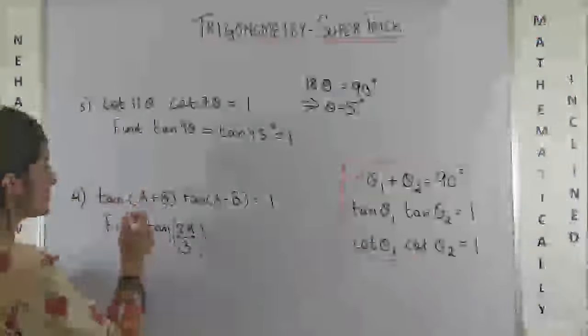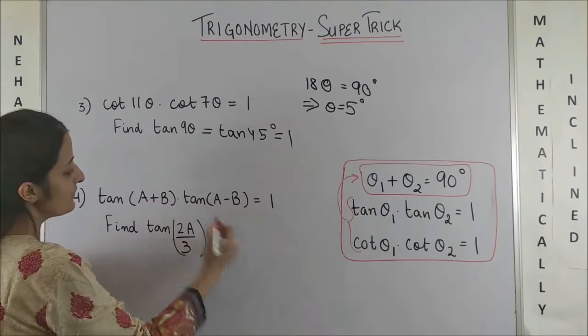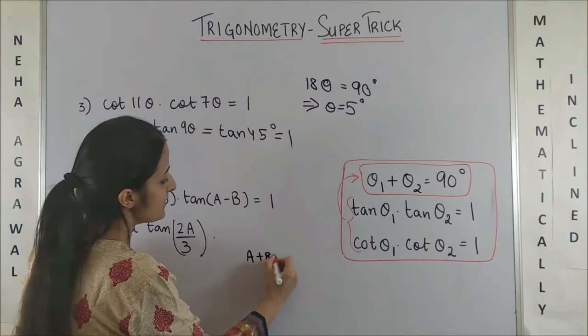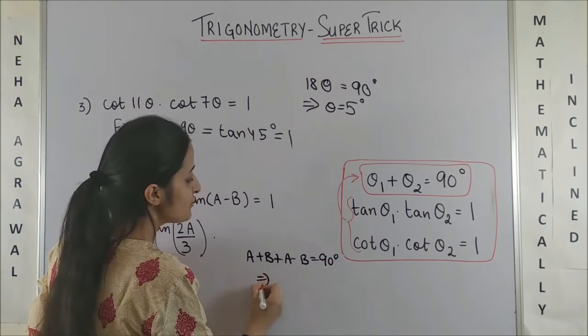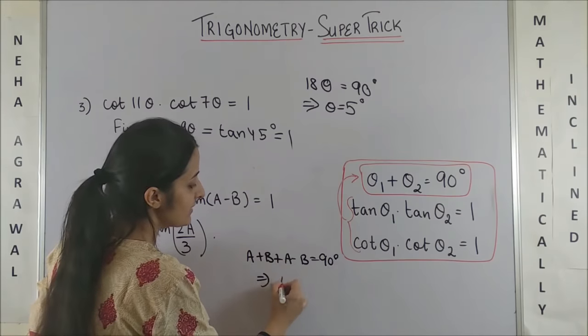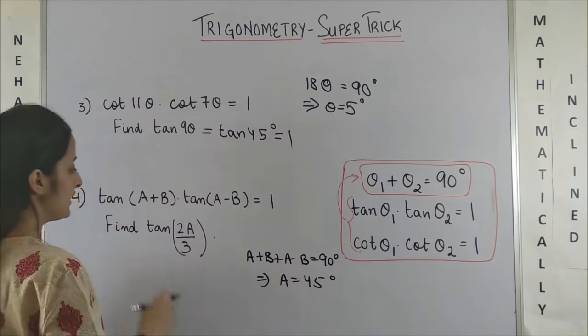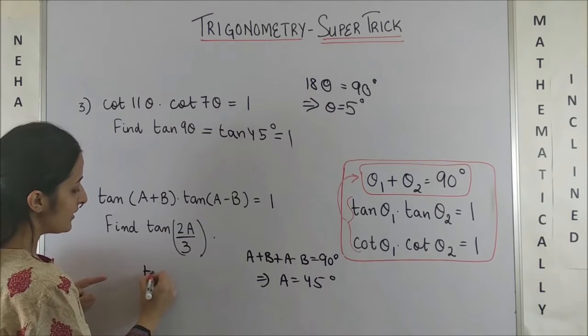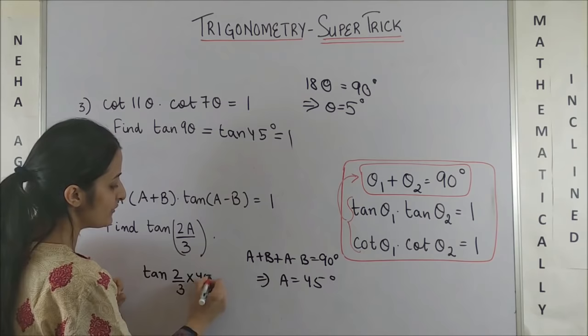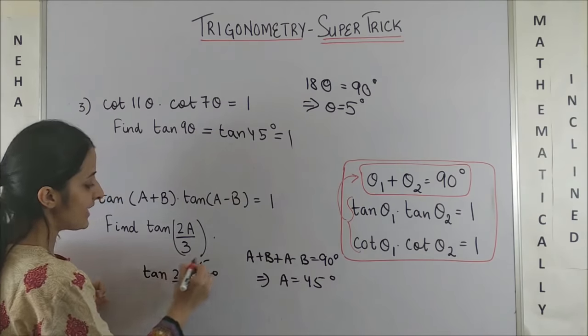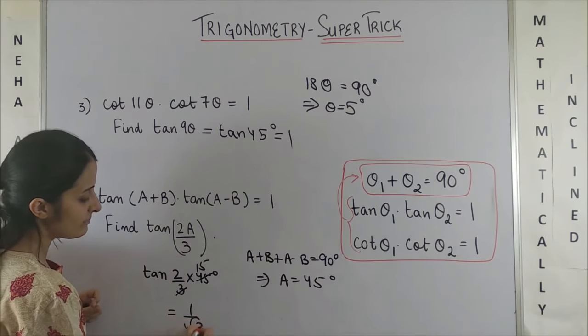Now, same way for the last one, since this product is already 1, this means A + B + A - B should be 90. So, which means 2A = 90°, that means A is simply 45°. Plugging in this value here, we are trying to ask what is tan of 2/3 × 45°, which is tan 30°, again 1/√3.